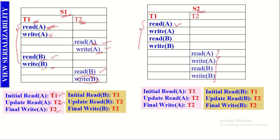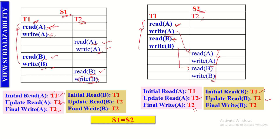In the serial schedule, the initial read on A is done by T1, and after the write operation on A, the update read is done by T2. There are two write operations on A, and the final write is done by T2. Similarly on B, the first read operation is done by T1, the update read on B is done by T2, and the final write on B is done by T2.